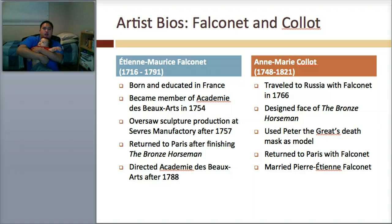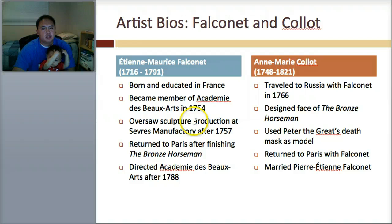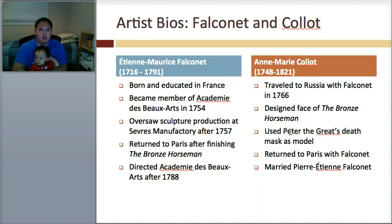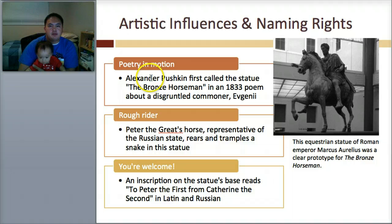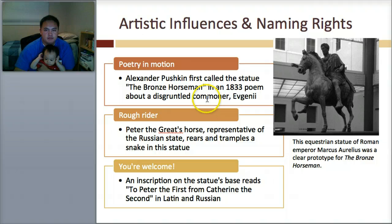Next, we have a couple of artists you need to know — one's called Falconet and another one's called Collot. Falconet was born and educated in France, oversaw sculpture production, and then returned to Paris after finishing the Bronze Horseman. Collot designed the face of the Bronze Horseman, using Peter the Great's death mask as a model. They both returned to Paris and were the ones responsible. You need to know the names Falconet and Collot, and that they were responsible for the Bronze Horseman. Alexander Pushkin first called the statue the Bronze Horseman in an 1833 poem. Peter the Great's horse — a representative of the Russian state — rears and tramples a snake in the statue. An inscription on the statue's base reads 'To Peter the First from Catherine the Second' in Latin and in Russian.